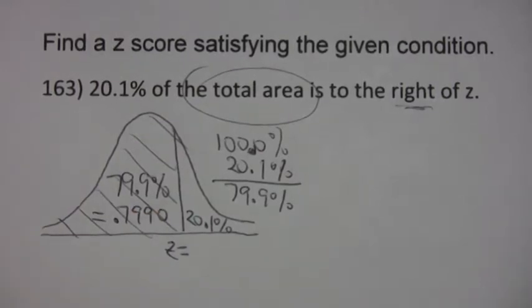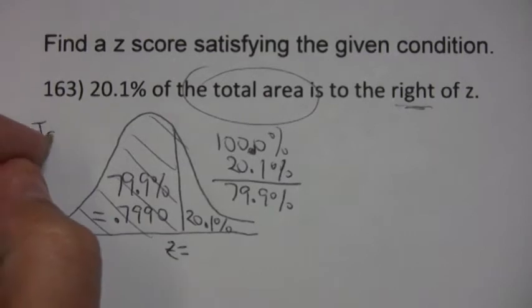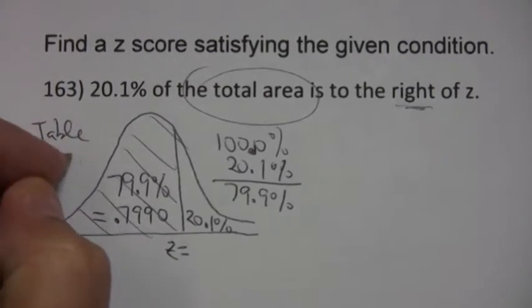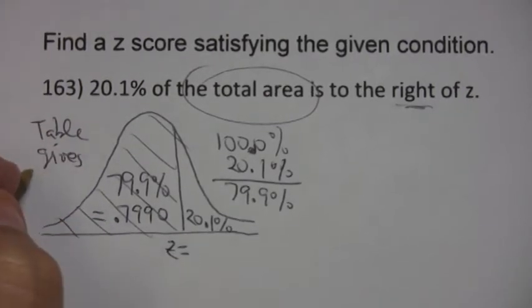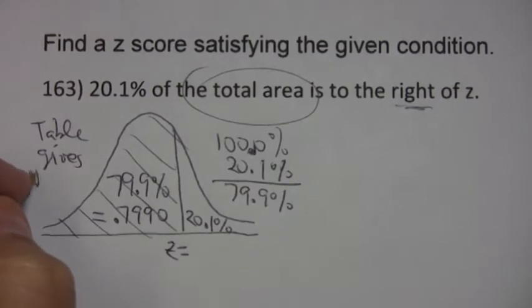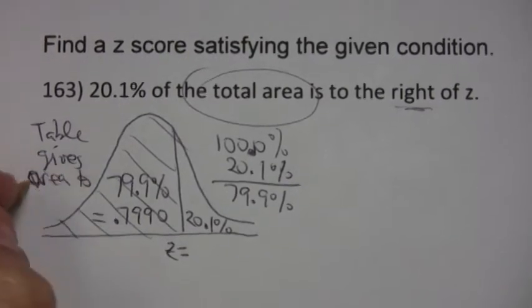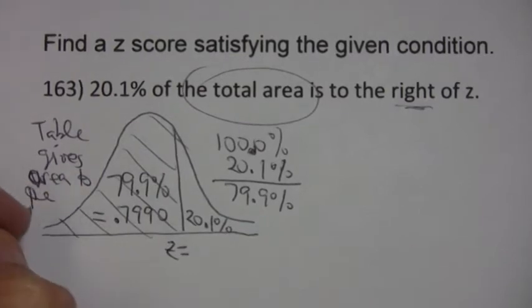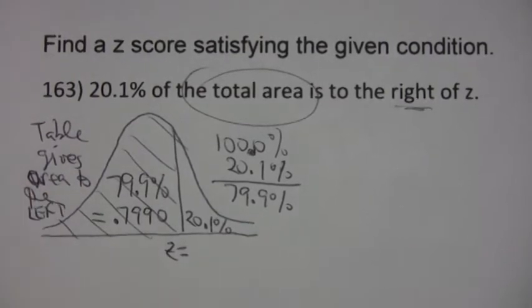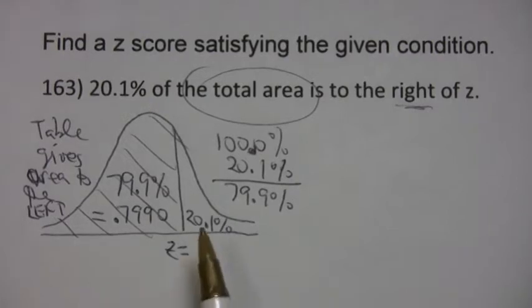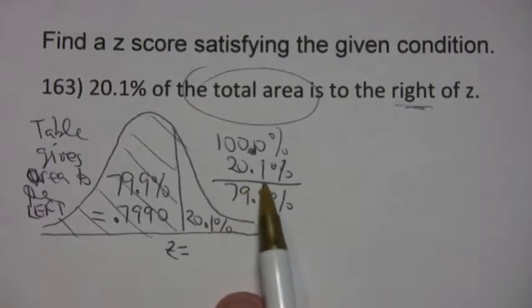But you've always got to remember the table gives area to the left. So you can't use this number directly, you have to subtract it from 100%.